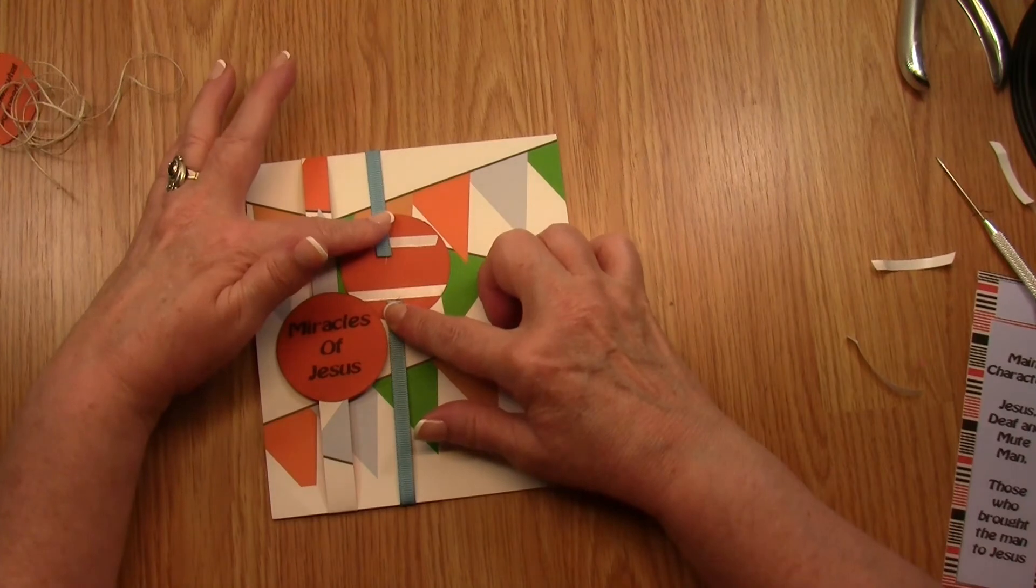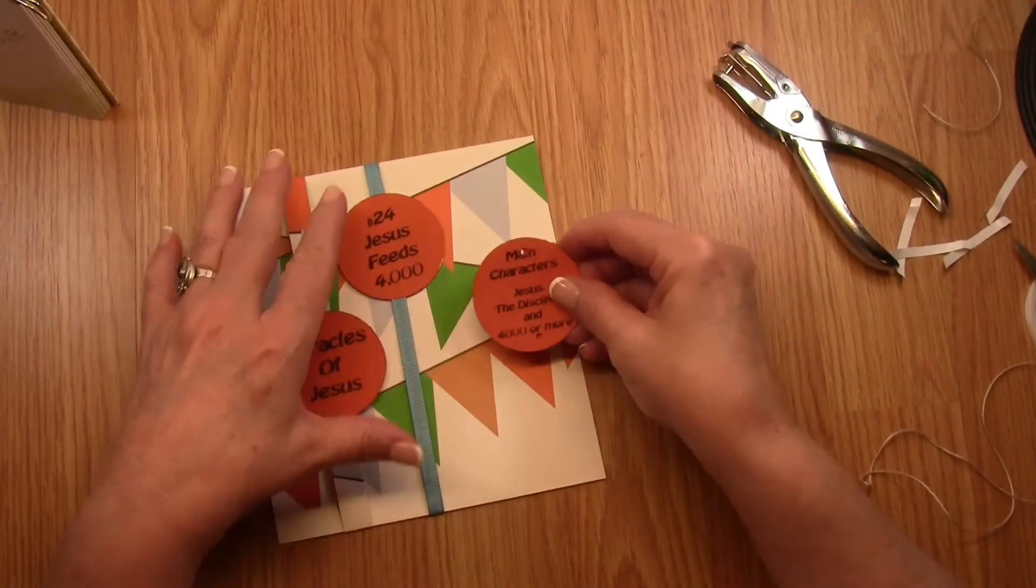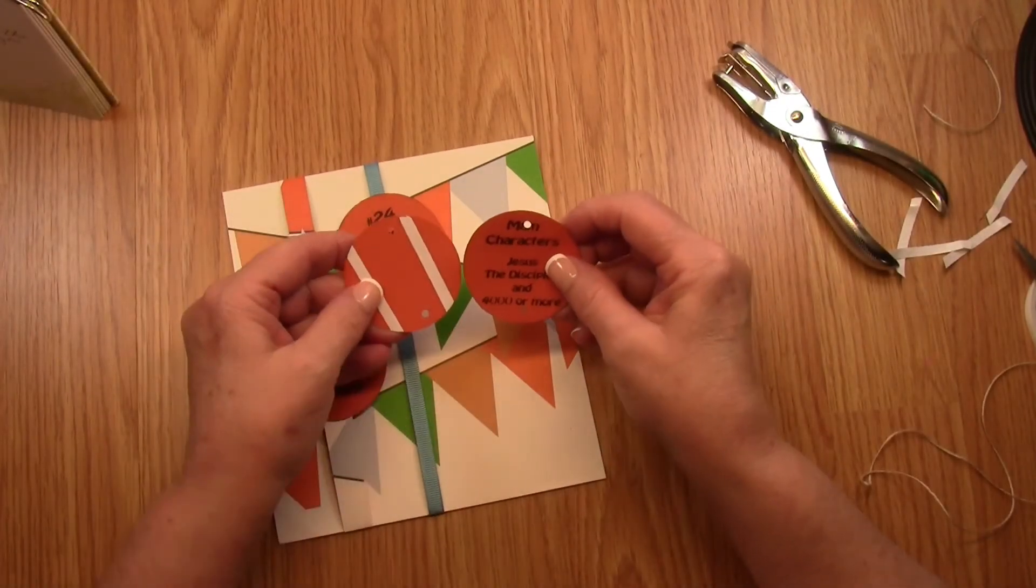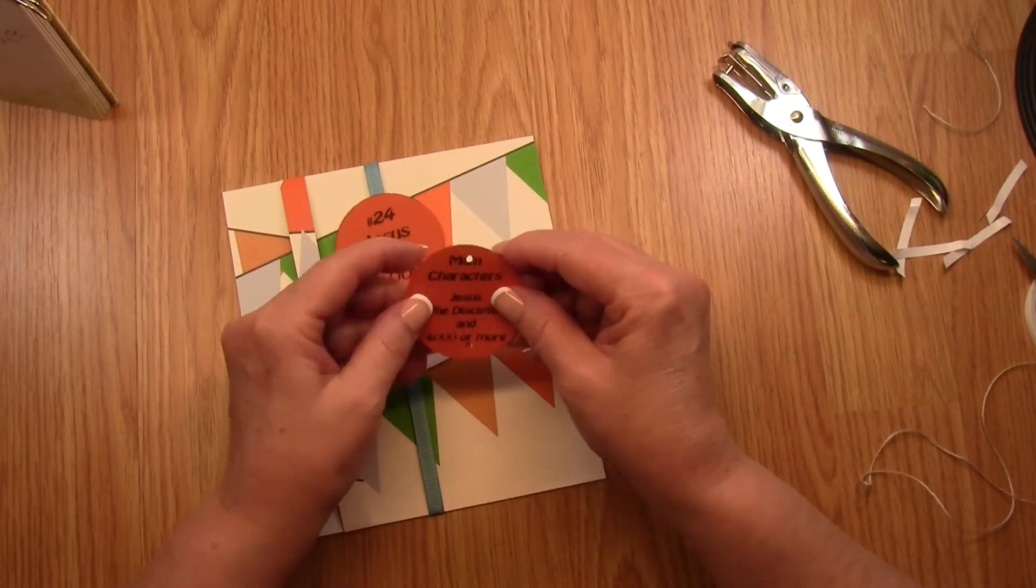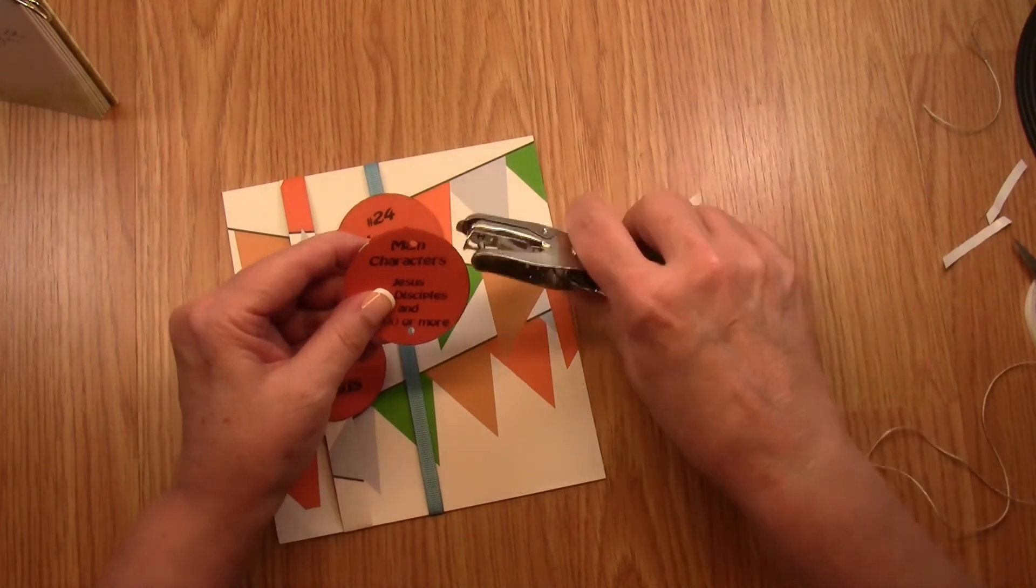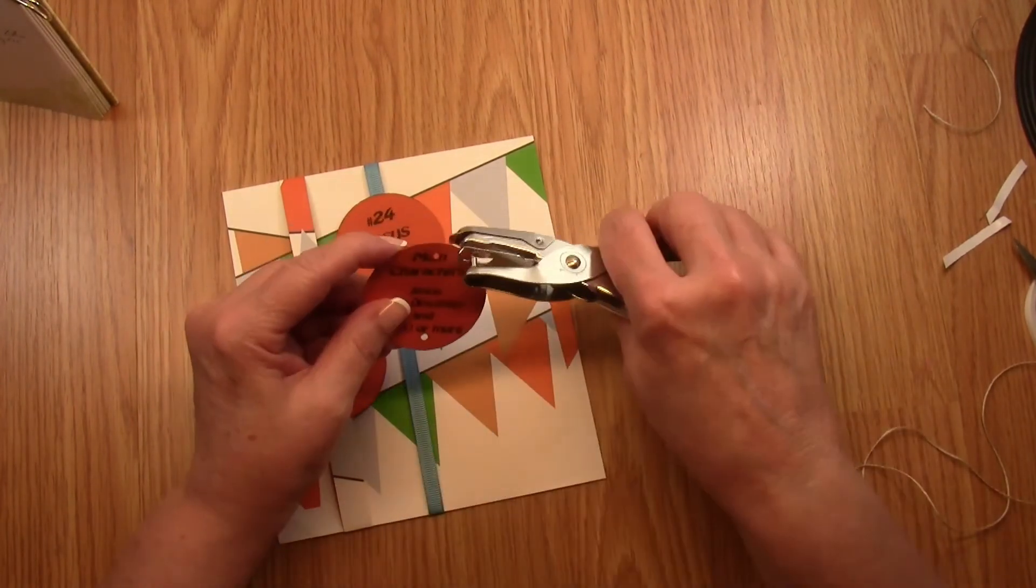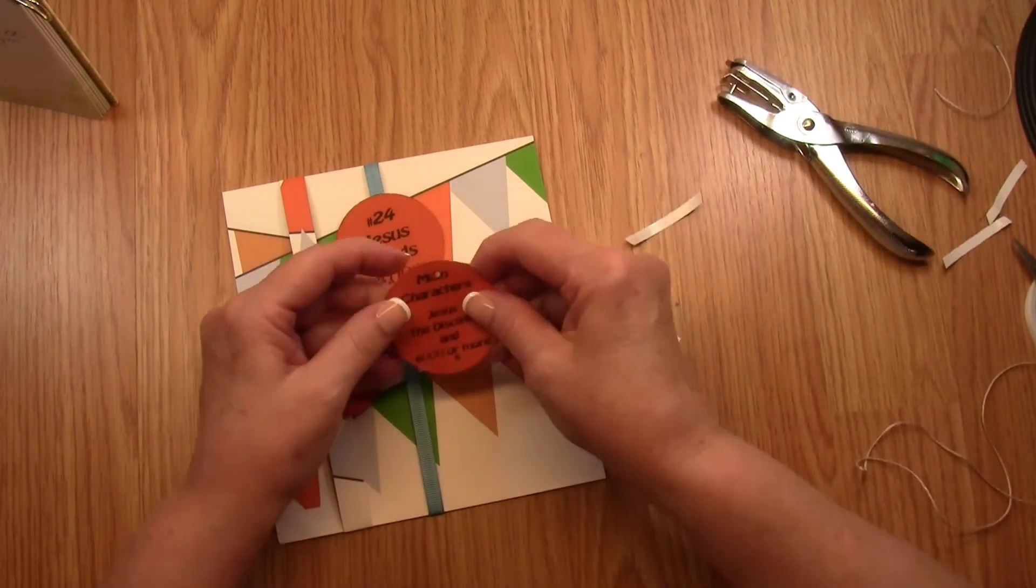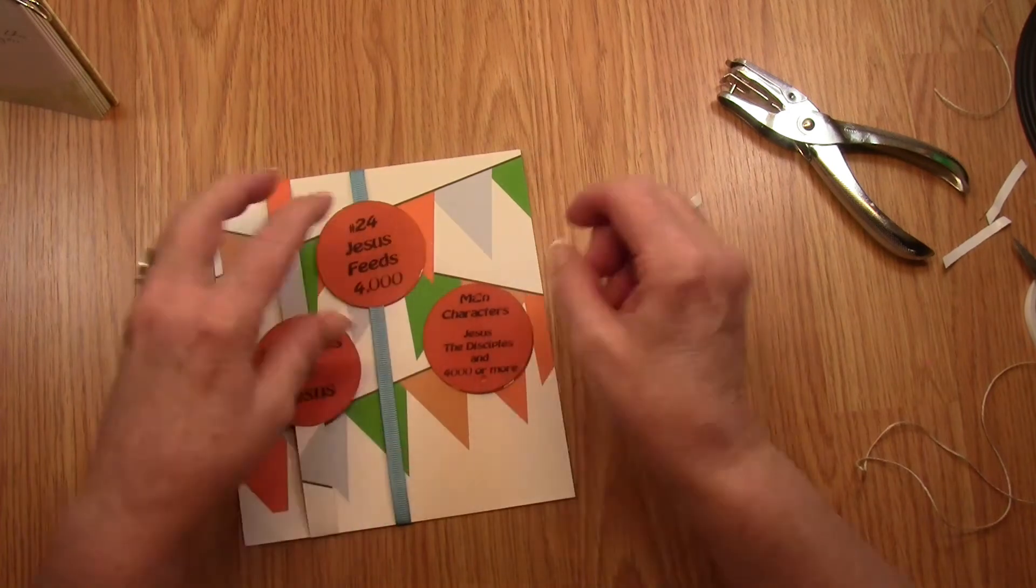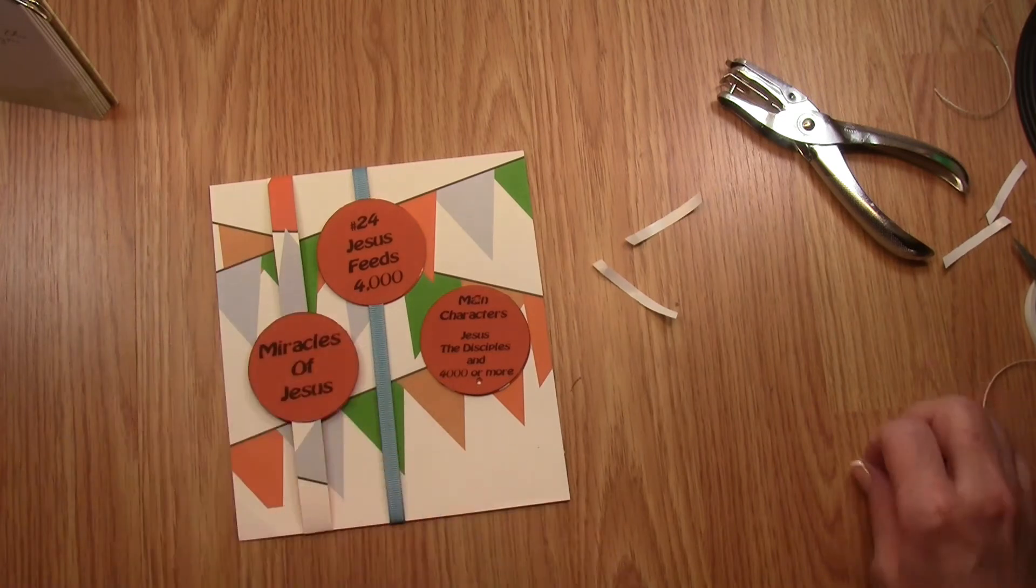Now for my last example, you're going to take your circles, your Main Characters and your Words to Live By, and you're going to place them together. And you're going to take a small hole punch and punch a hole in the top and a hole in the bottom. Now we're going to want to place this on the left side of the page.